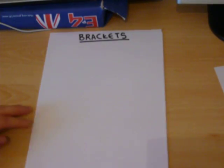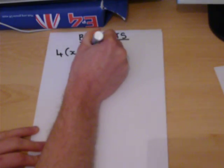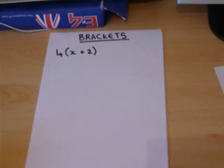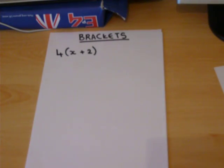Suppose you had the following question. This has got brackets in it. Now we can remove the brackets by expanding, and this involves multiplying.